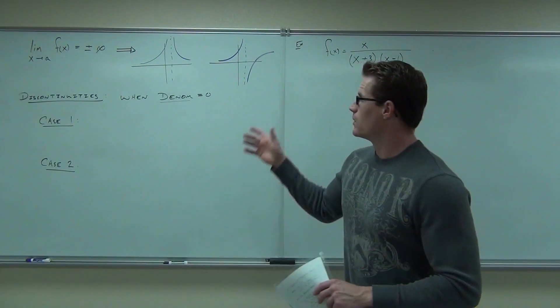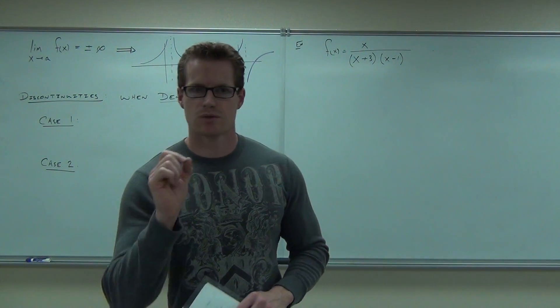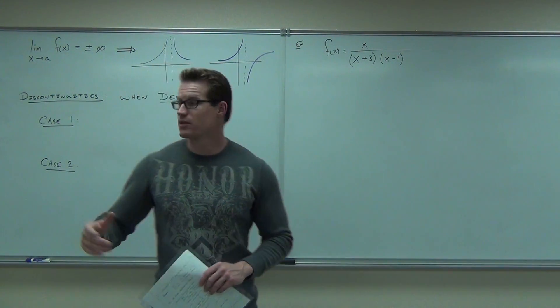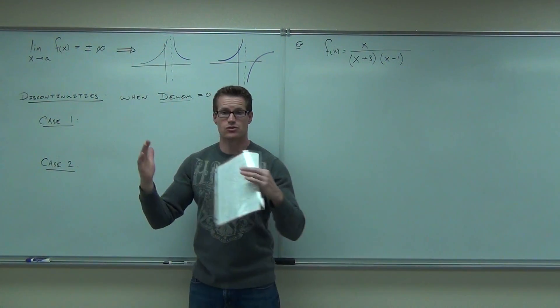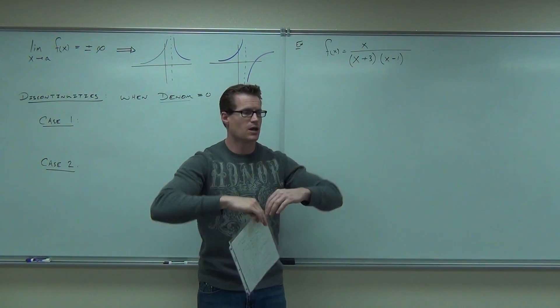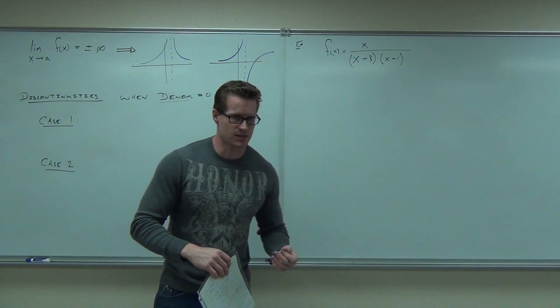So if you'll recall, when we take a limit of a function as we approach some number and it goes to infinity, we're going to have an asymptote. We're going to have either an asymptote where the limit exists as they both go to positive infinity. I didn't draw the case where they both go to negative infinity. Or where one goes to positive and one goes to negative. And then we define that with a sign analysis test.